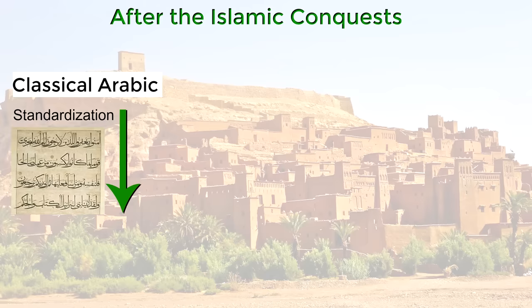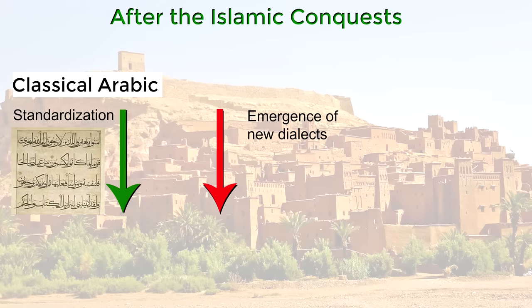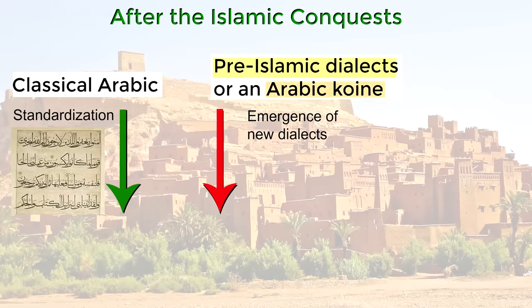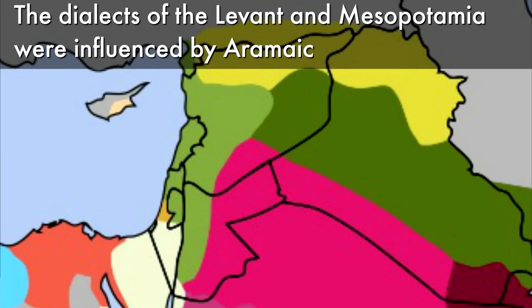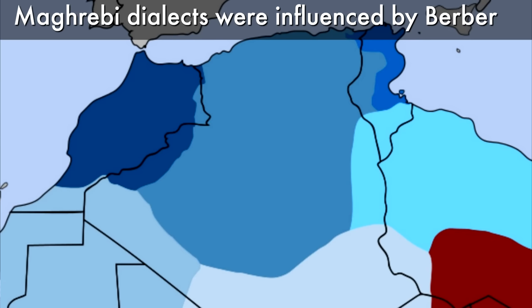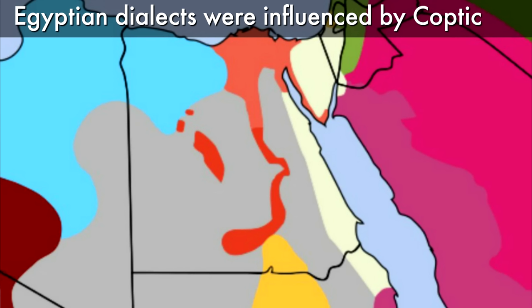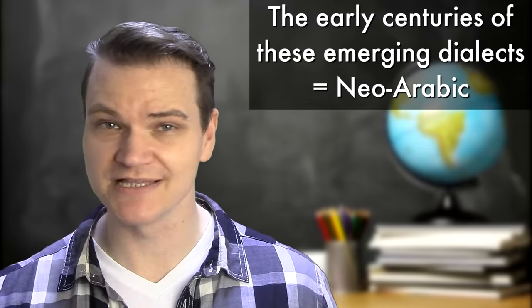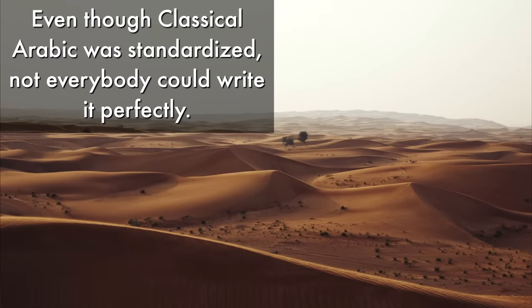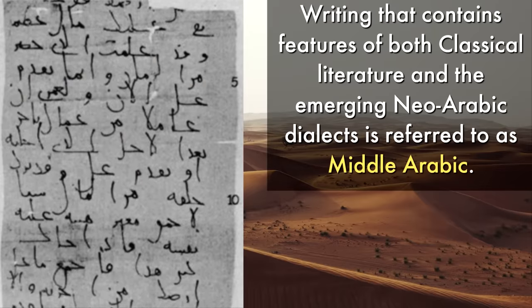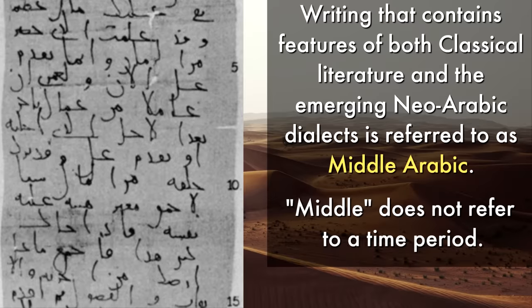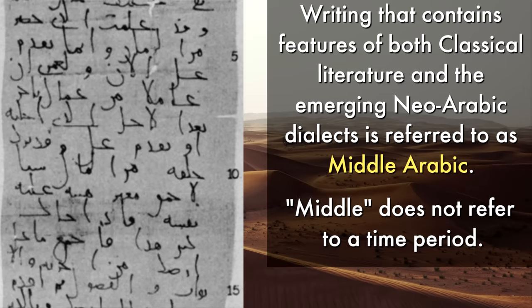While Classical Arabic was being standardized as a written language, local dialects also emerged in the cities of the Arab Empire. These dialects did not descend directly from Classical Arabic, but from pre-Islamic Arabic dialects or a single Arabic koine — the common language of conquering Arab armies. These new dialects were influenced by the original languages of conquered areas: Levant and Mesopotamia dialects by Aramaic, Maghreb dialects by Berber, and Egyptian dialects by Coptic. The early centuries of these emerging dialects are called Neo-Arabic. Writing containing features of both Classical Arabic and these dialects is referred to as Middle Arabic — not a time period, but texts somewhere between Classical and Colloquial.